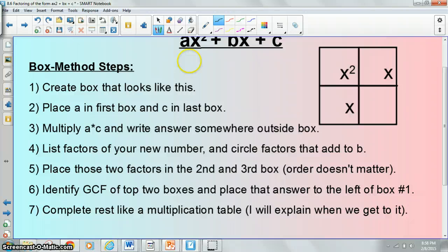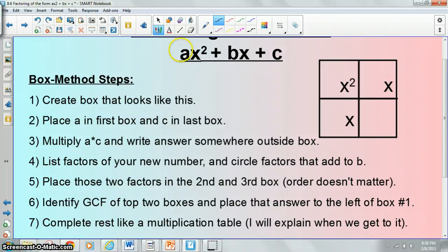Step 1 is to create a box that looks like this: x squared in the first box, x and x in the second and third boxes, and then nothing in the last box. The next thing you do is place a, whatever the coefficient of the x squared term is, goes in the first box. Whatever is by itself at the end goes in the last box. You're going to multiply those two numbers that you just wrote there together. List factors of that number. And you're also going to be looking at these factors for what adds to our middle term just like we were before.